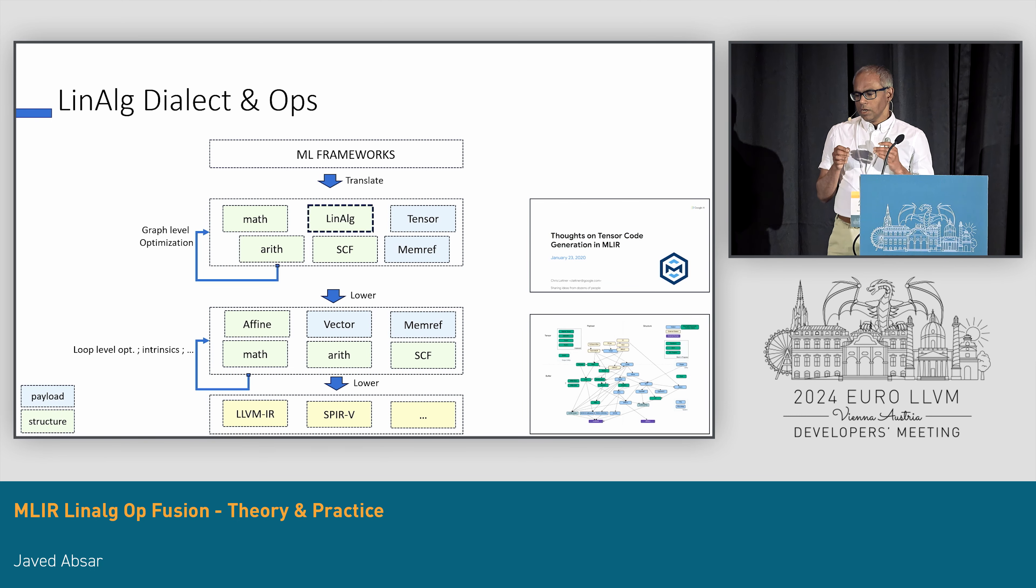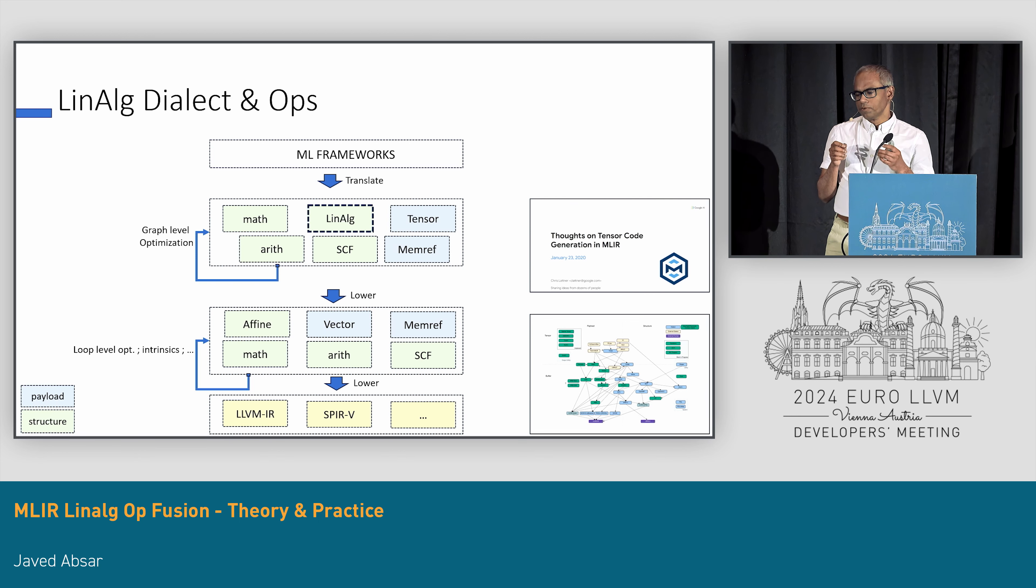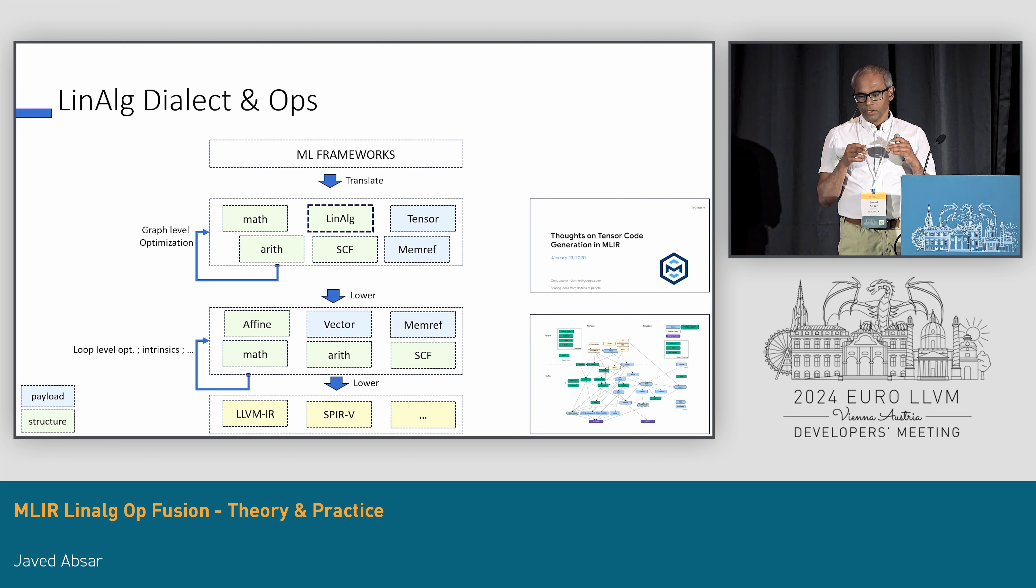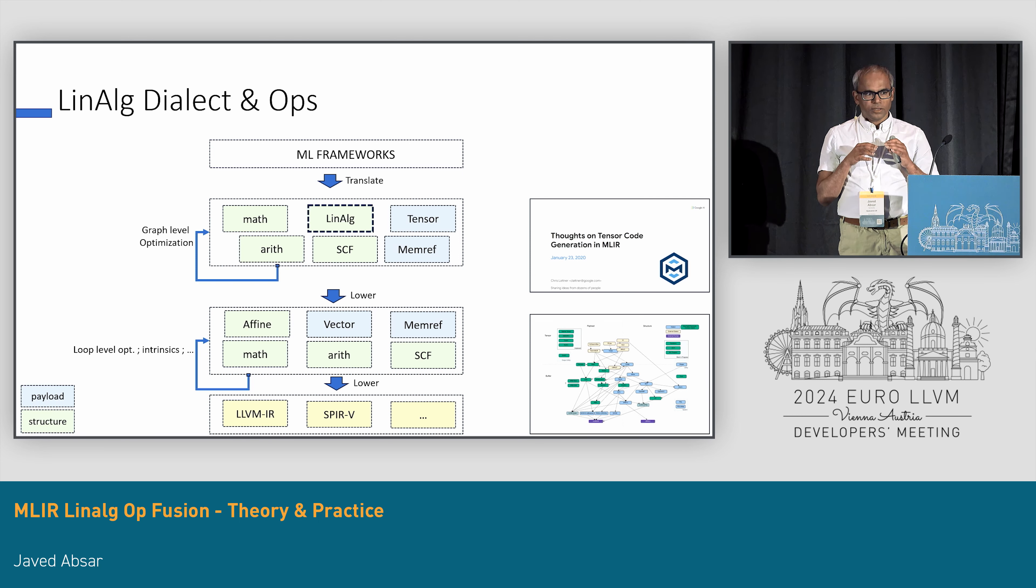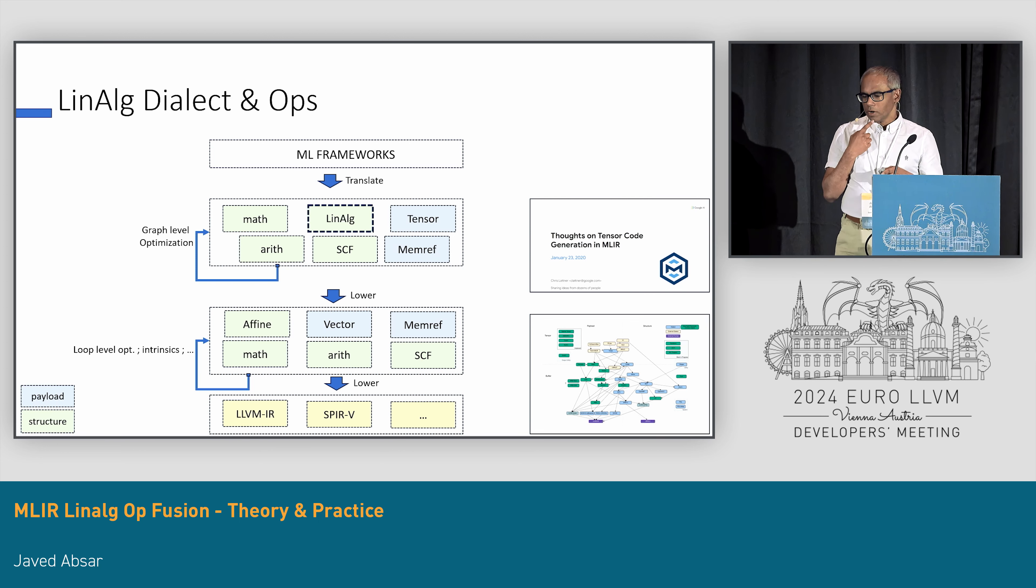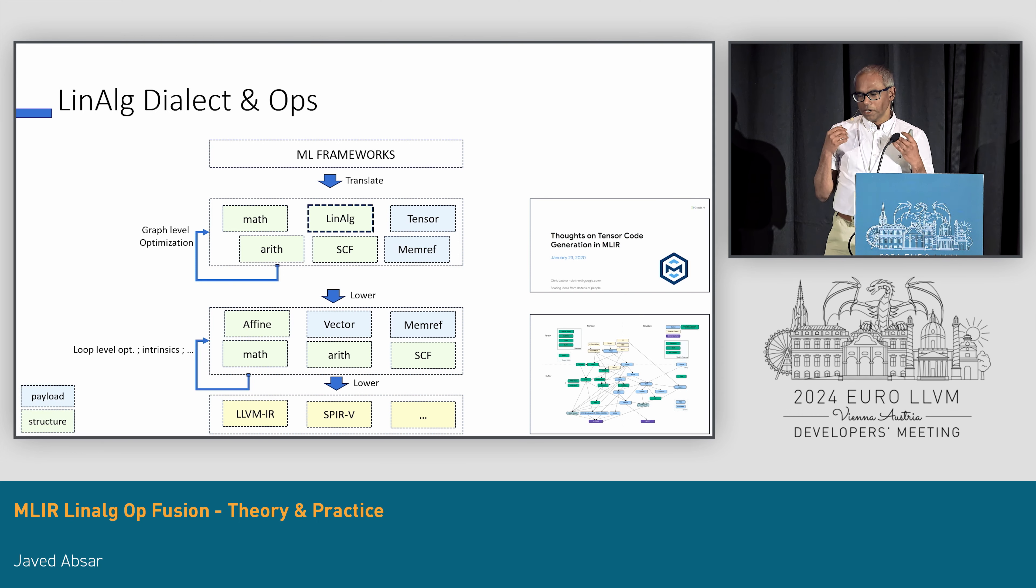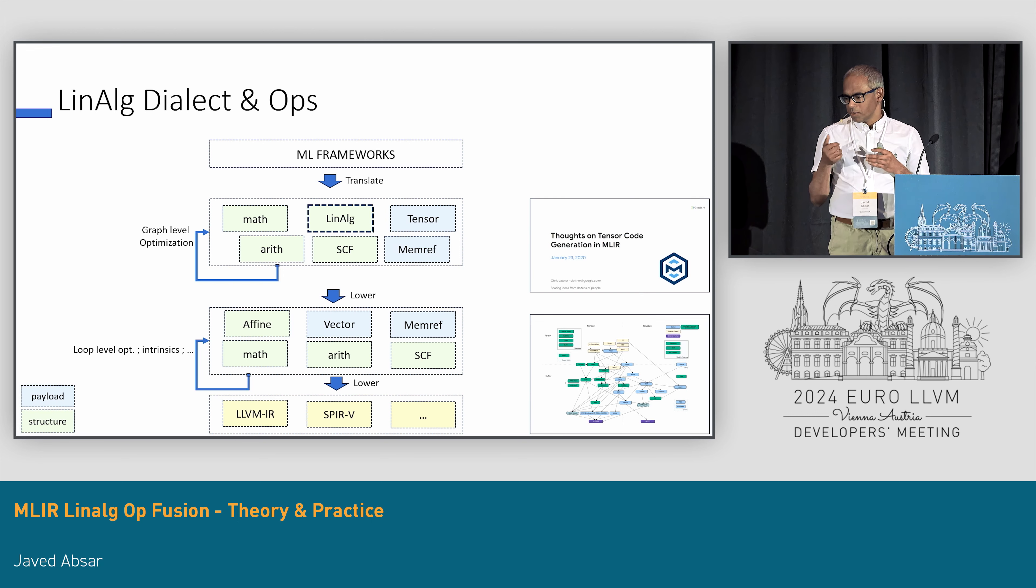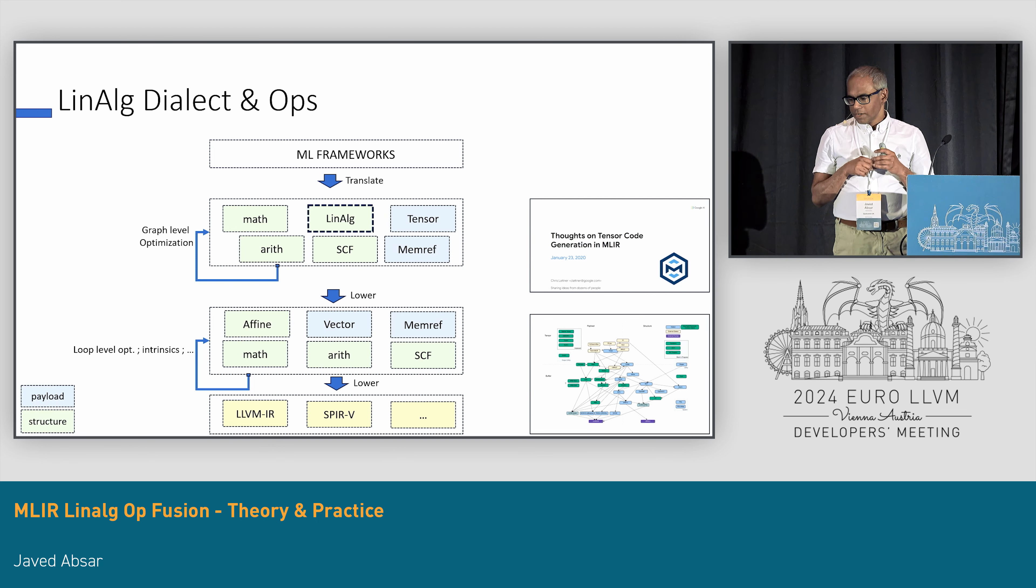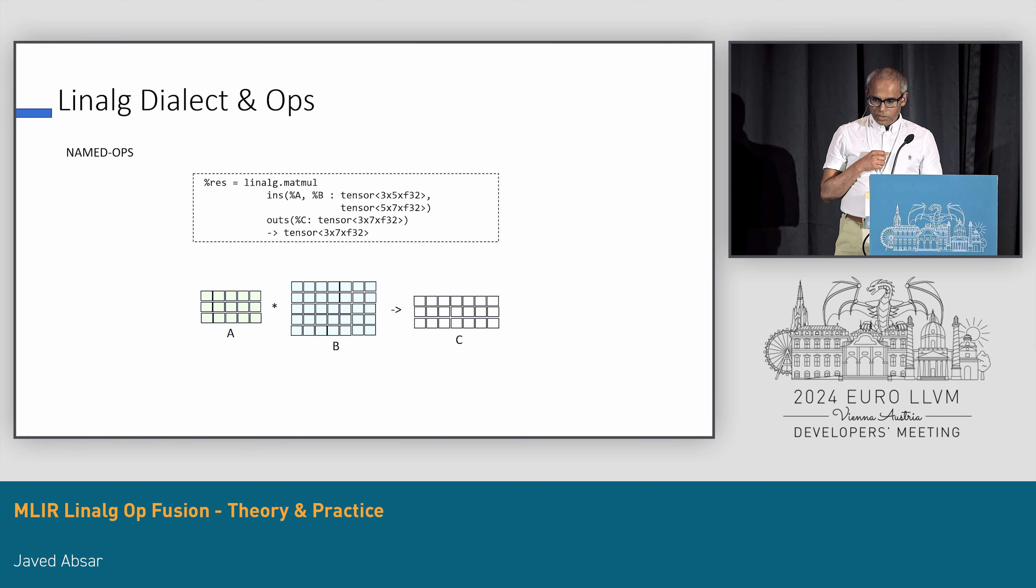Let's jump in. The Linalg, or linear algebra, is the core abstraction when lowering from ML graphs from frameworks to the MLIR ecosystem. At that stage, you will have not just the Linalg ops, but also math, arith ops. If you have a loop, a SCF loop that we saw previously. These carry the structure and the computation, while the tensor memref carry the payload or the data and operations such as broadcasts that happen on the data. A good slide is Thoughts on Tensor Codegen in MLIR 2020 by Chris Lattner. Go have a look, find it on the internet.